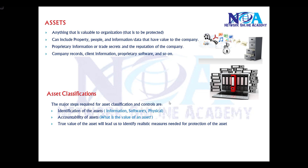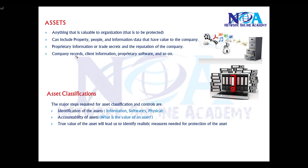In this video we'll try to understand assets and their classifications. As discussed in previous videos, an asset is anything valuable to the organization that needs to be protected. If you are implementing network security, it can be a property, people, database, or information stored inside the company. Typically it includes company records, client information, or proprietary software.